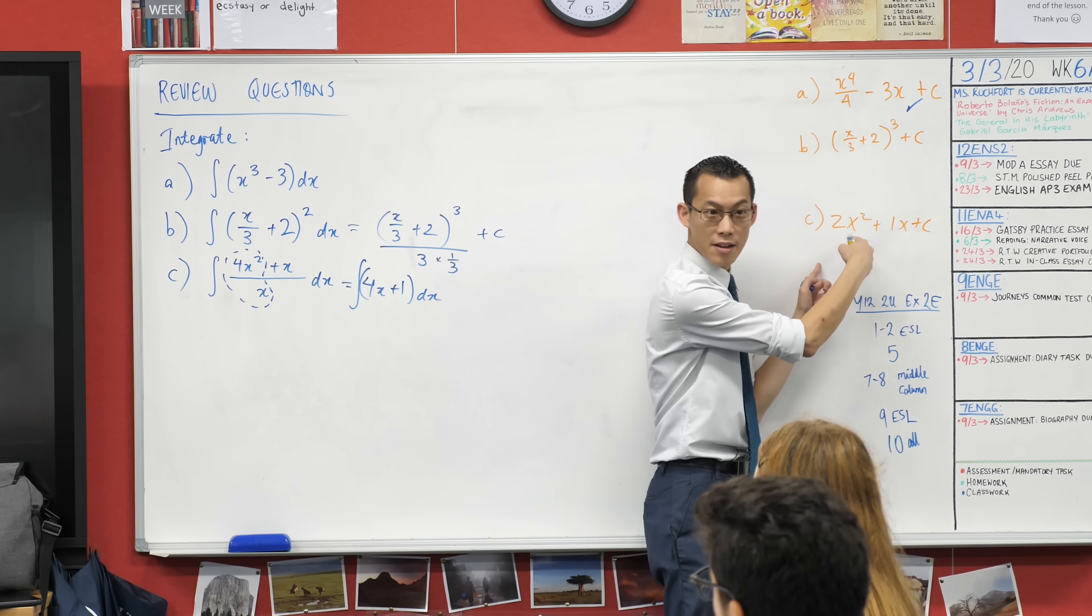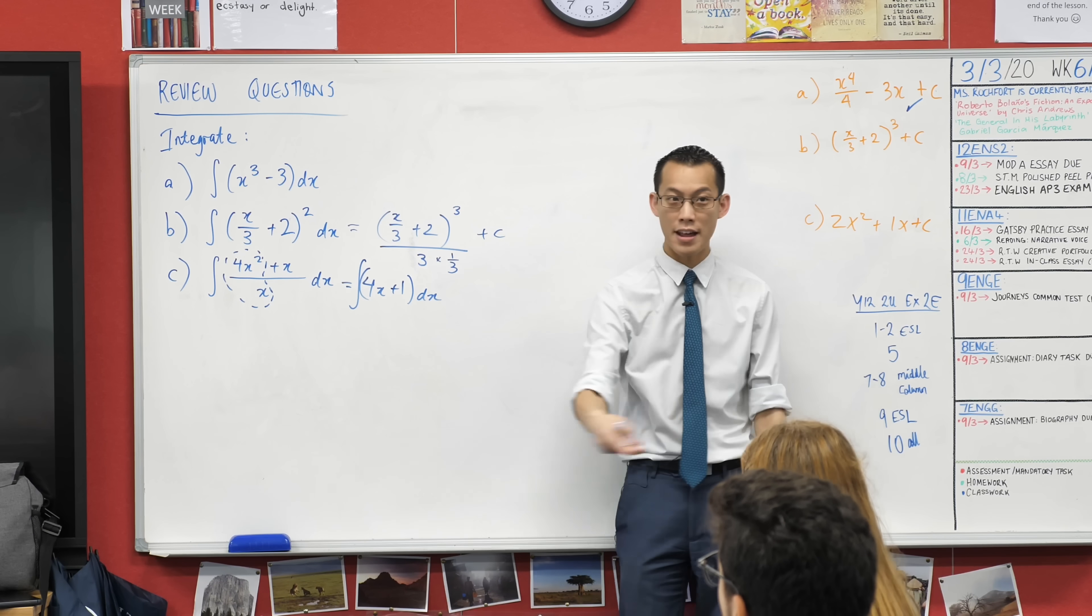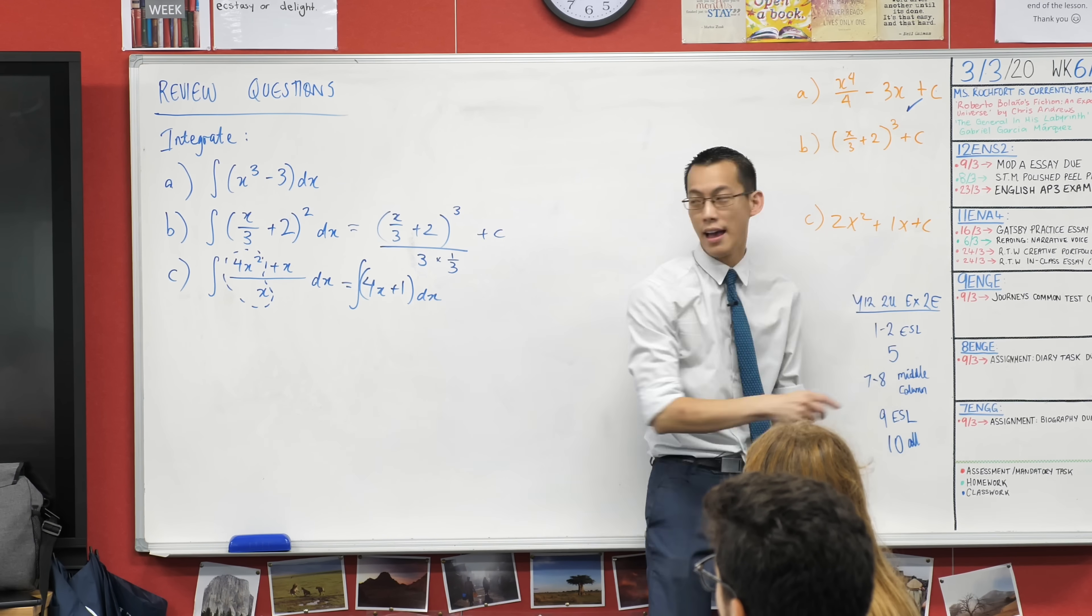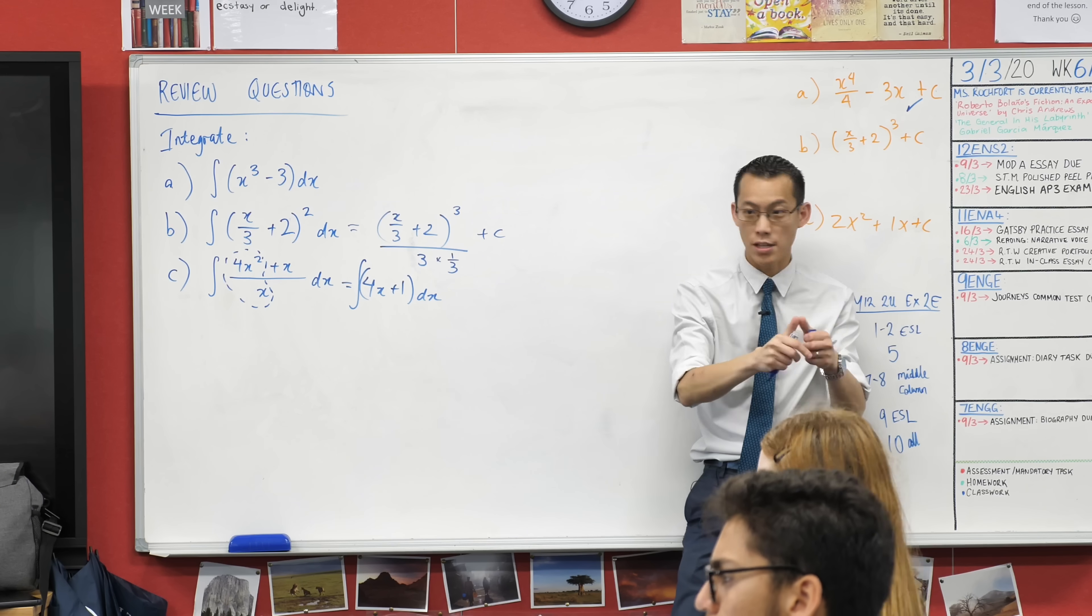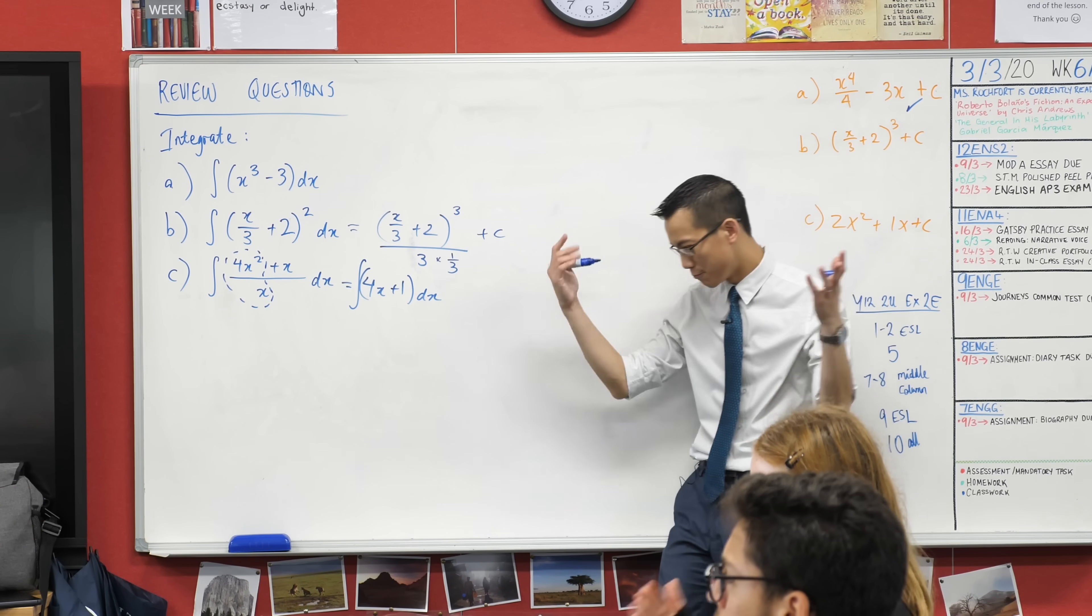And now that I've written it in a much neater form, hopefully it's now clear to you where this came from. The index has gone up, he's divided by that new index, the 4 divided by the 2 leaves him with 2, and then off he goes from there. So thumbs up, are you happy?